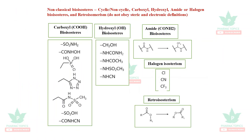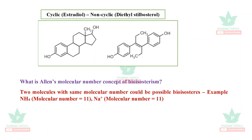Non-classical bioisosteres include carboxyl bioisosteres: COOH can be replaced by SO2NH2 or SO2OH. Other non-classical examples involve cyclic versus non-cyclic equivalents, such as estradiol and diethylstilbestrol, which are cyclic and non-cyclic equivalents of each other. This concept was pioneered by Alan, the first scientist to describe this molecular equivalence.